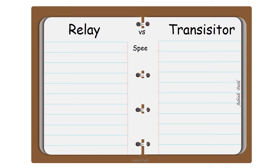Speed of operations. Relay operates on low frequency up to 200 hertz. Transistor can operate at megahertz frequency.